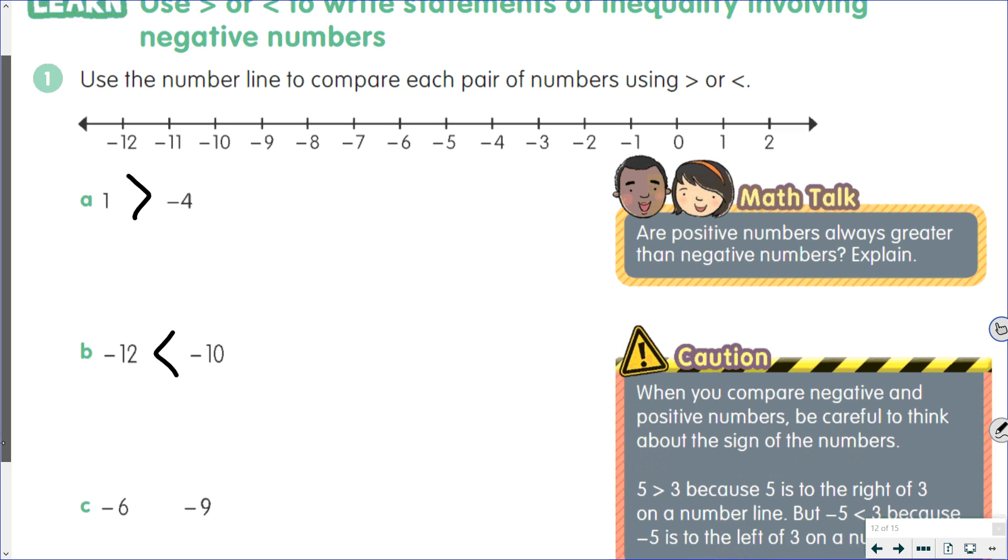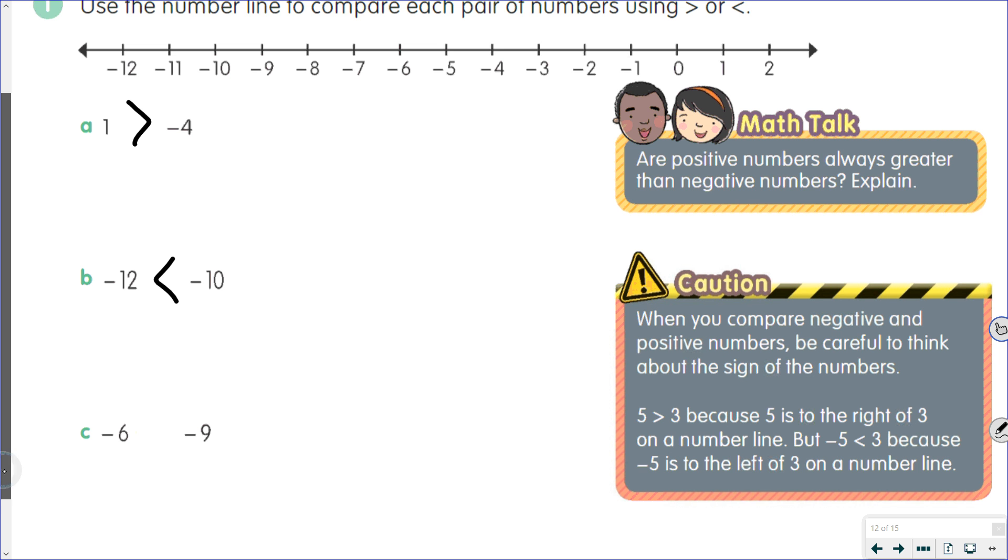For part C, if we were comparing 6 to 9, 6 would be the smaller number. But since they're both negative, negative 6 is going to be larger than negative 9.